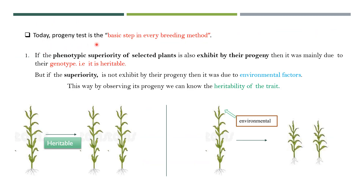Today, progeny testing is the basic step in every breeding method. Let's see how progeny testing helps us in knowing the worth of a plant. Suppose you have made selection for tallness of the plant and you have selected a tall plant. Now you have grown its progeny and you observe that all its progeny is also showing tallness. From this, you can say that this tallness is being inherited from this generation to the next generation. This phenotypic superiority of the selected plant is mainly due to its genotype, which is heritable.